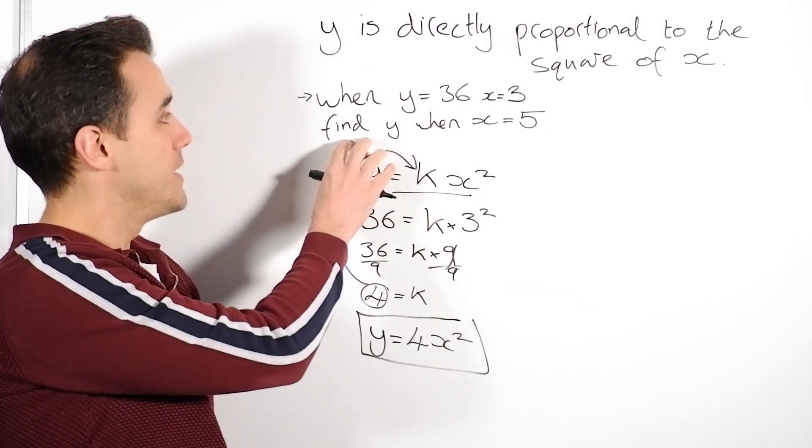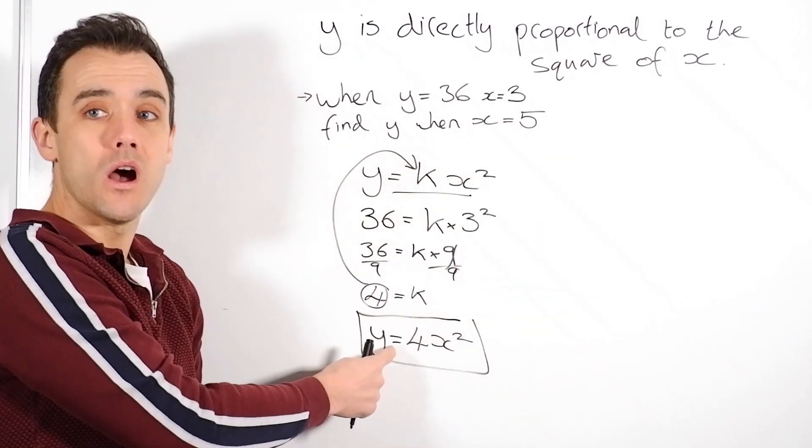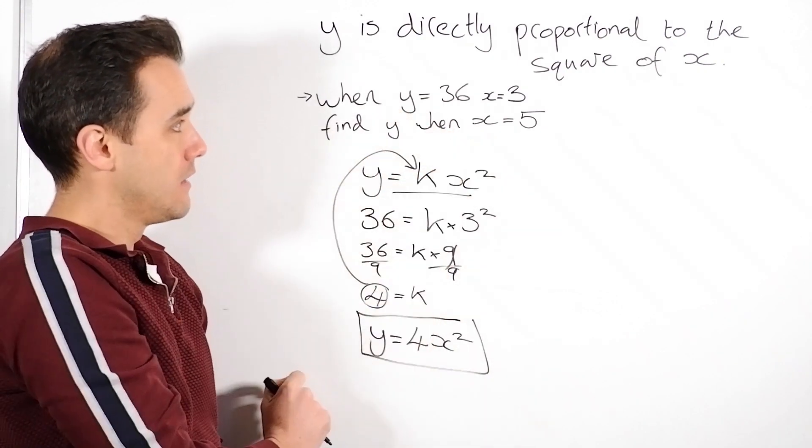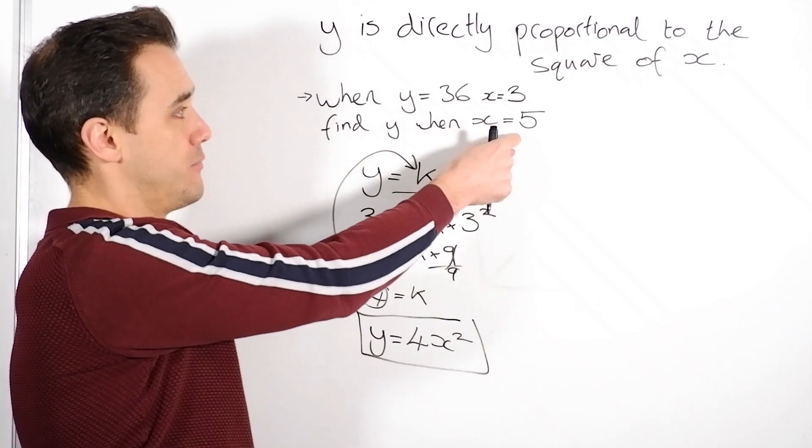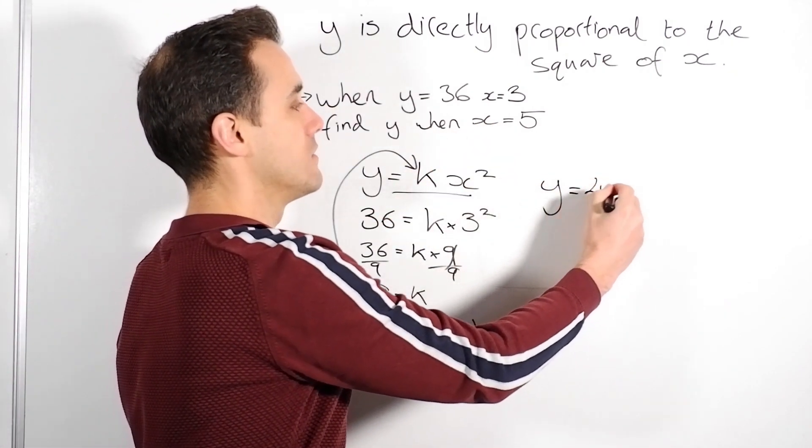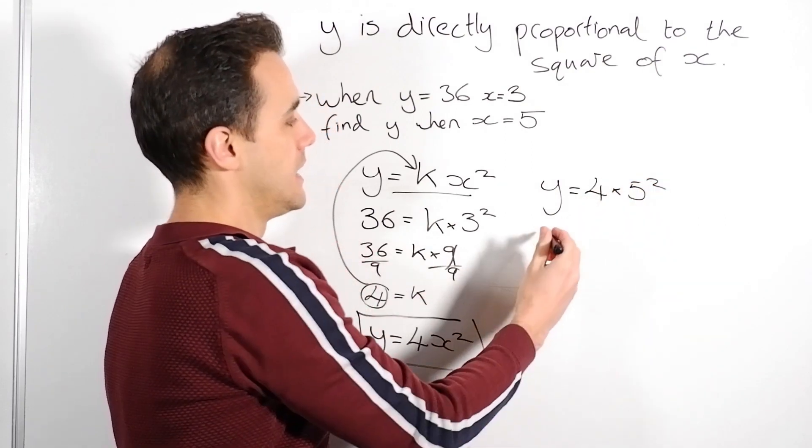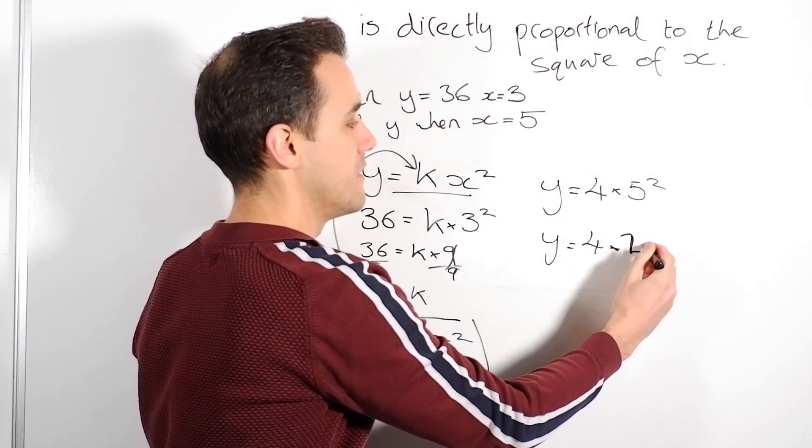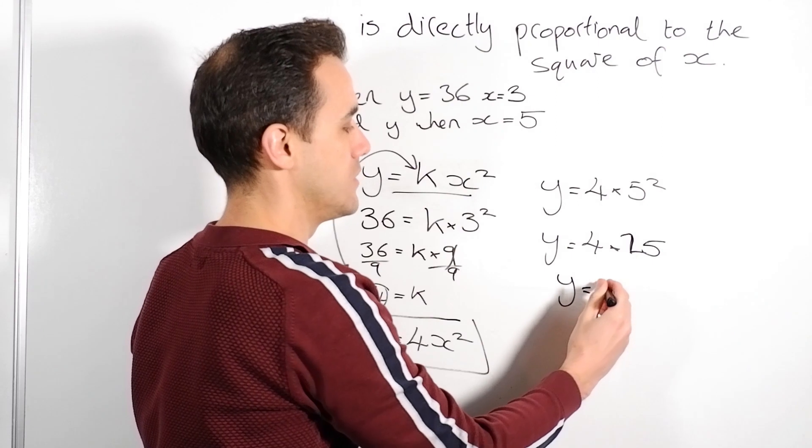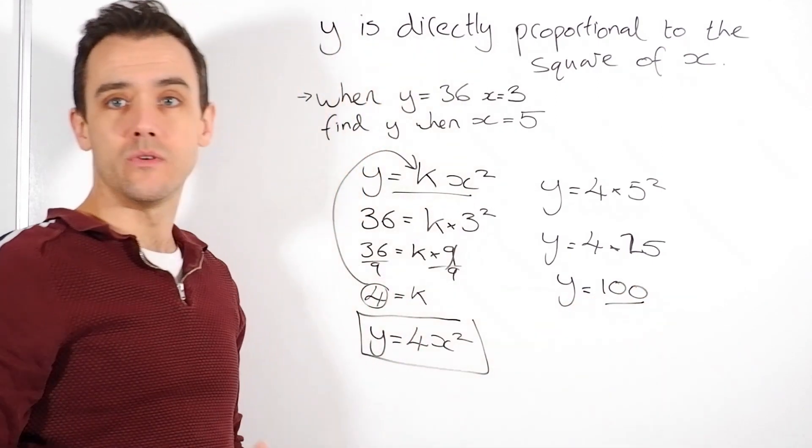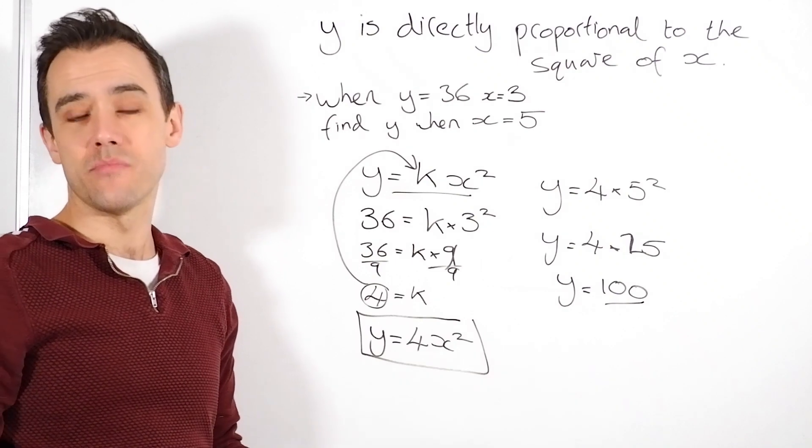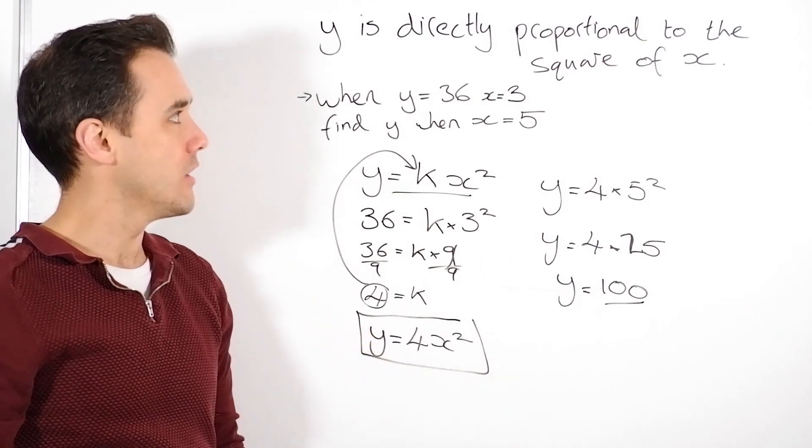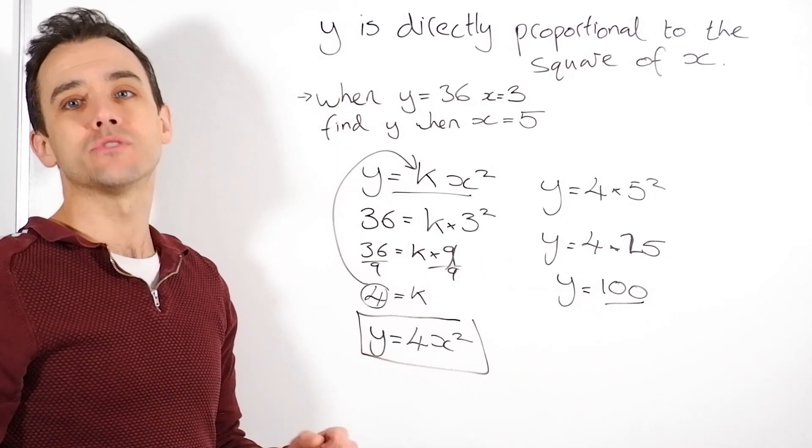But in this case, we want to find y when x is 5. So now I can find y for any value of x. I can find x for any value of y. So find y when x is 5. We just use this equation and put x as 5 in. So we find that y is 4 times 5 squared. So y is 4 times by 25. So y equals 100. And there it is. We've answered that entire question. Potentially five marks in the bag in the exam. Practice a load of those. Get some past papers up. Have a go at a load of those questions. You'll find they are an absolute banker for the exam.